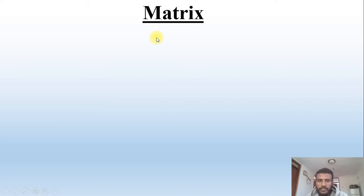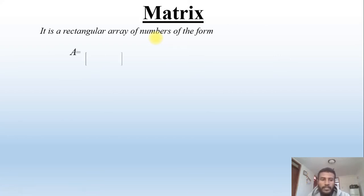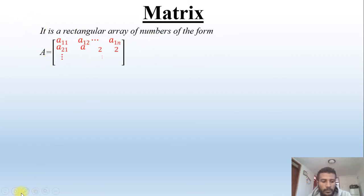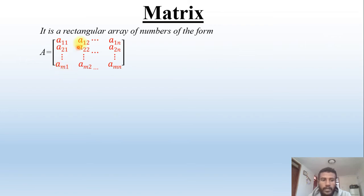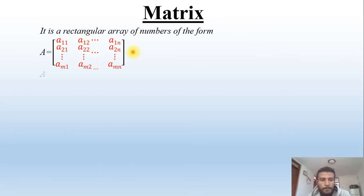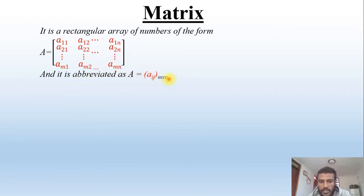A matrix is a rectangular array of numbers of the form A equals a₁₁, a₂₁, ..., aₘ₁, a₁₂, a₂₂, ..., aₘ₂, ..., a₁ₙ, a₂ₙ, ..., aₘₙ. This is the form of a matrix, and it is abbreviated as A = [aᵢⱼ] of size m×n.